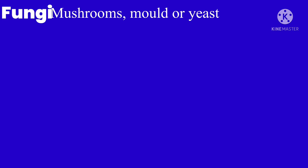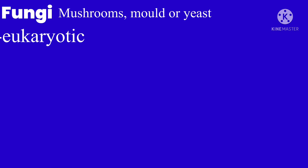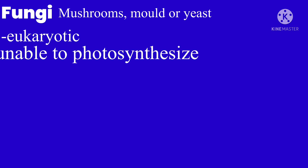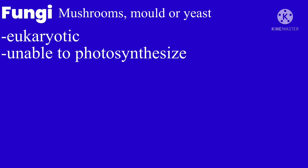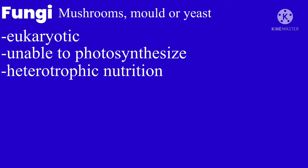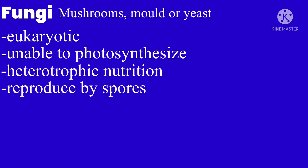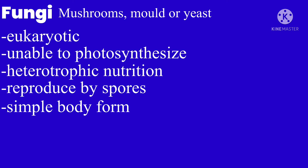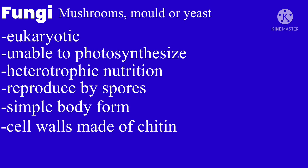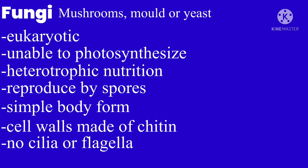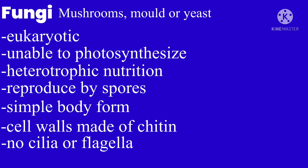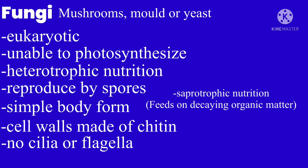Now for kingdom Fungi. Fungi are mushrooms, mold, or yeast. They are eukaryotic and have some similar properties to plants, but they are not able to photosynthesize. They use heterotrophic nutrition — that means they use organic compounds, like people. They reproduce by spores and have a simple body form. Their cell walls are made of chitin or other substances. They don't have cilia or flagella, and they also use saprotrophic nutrition.